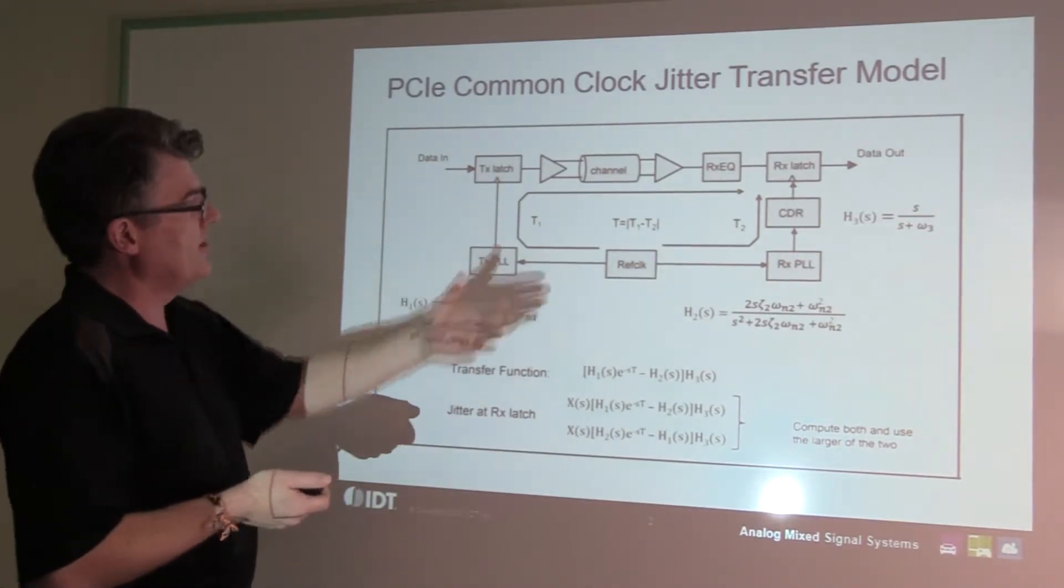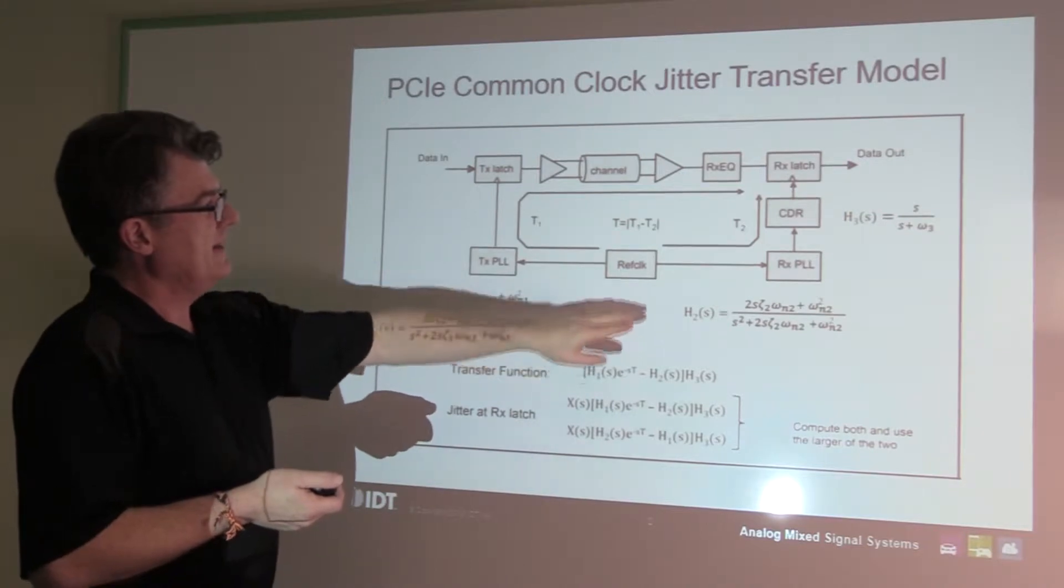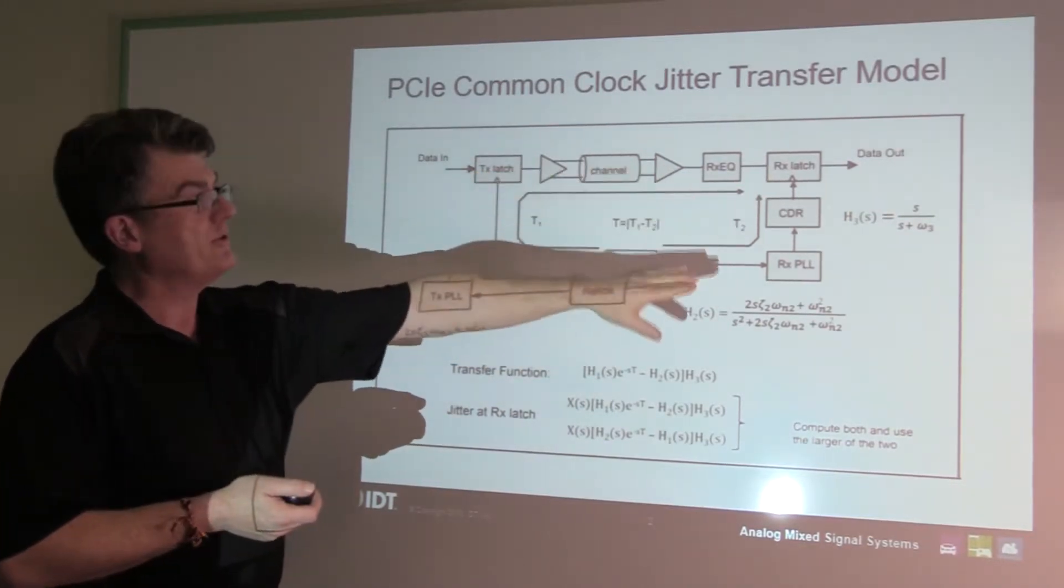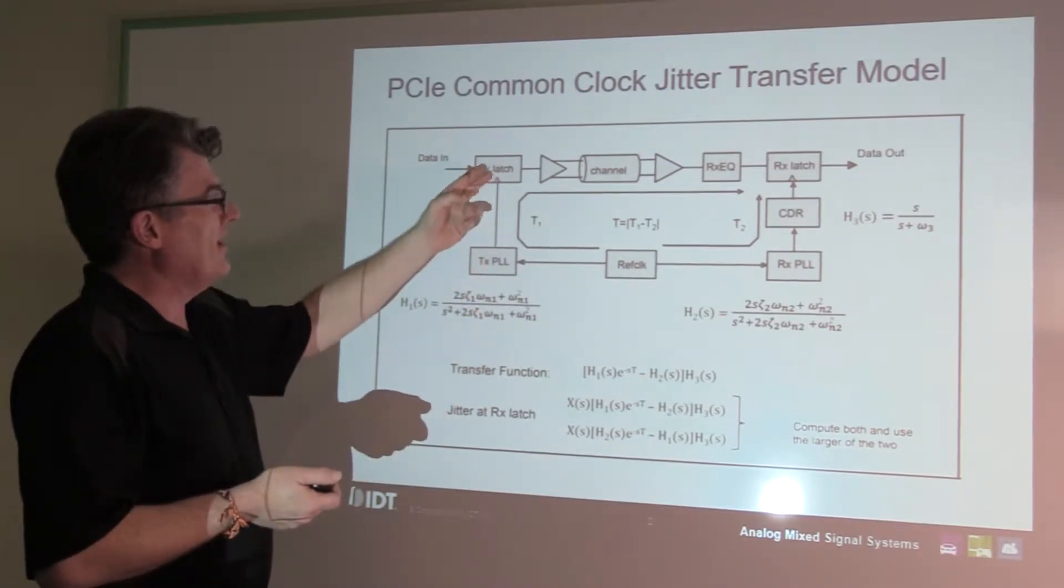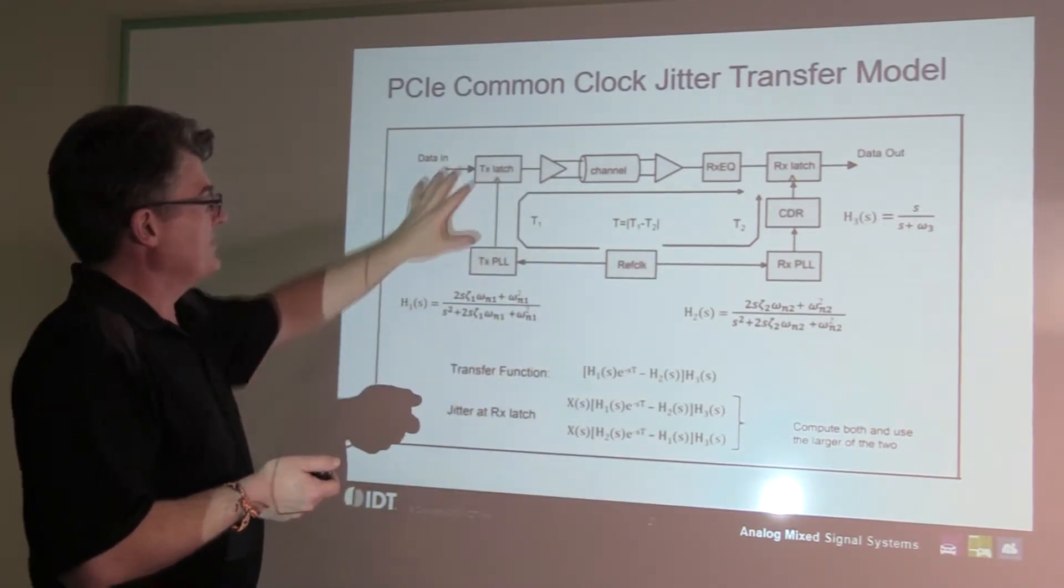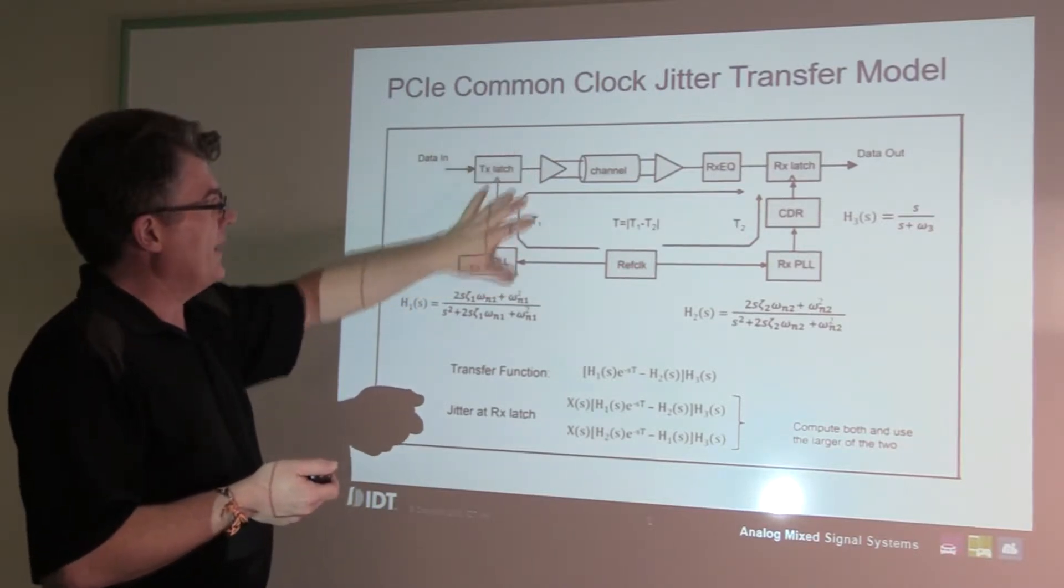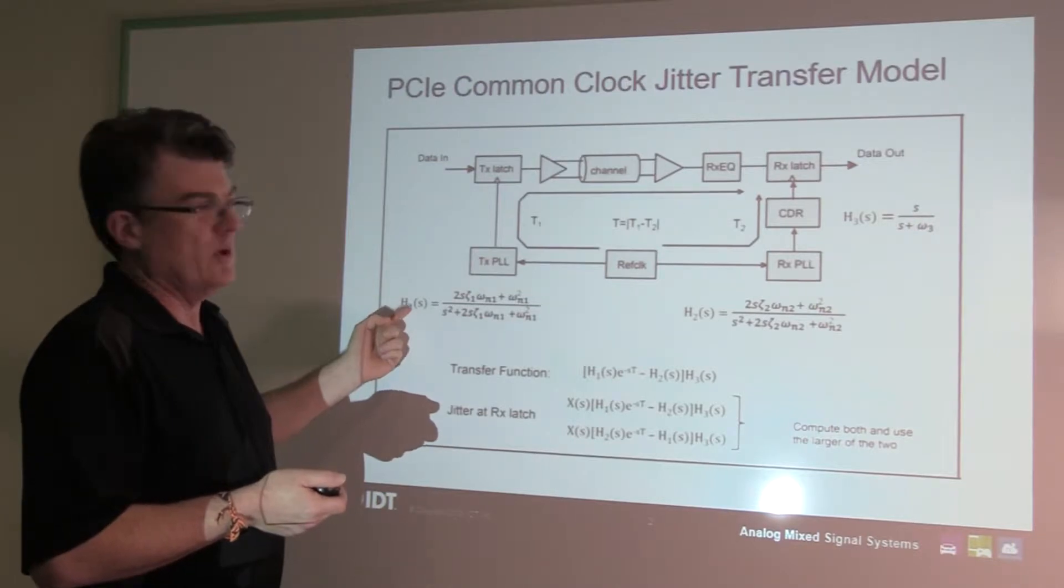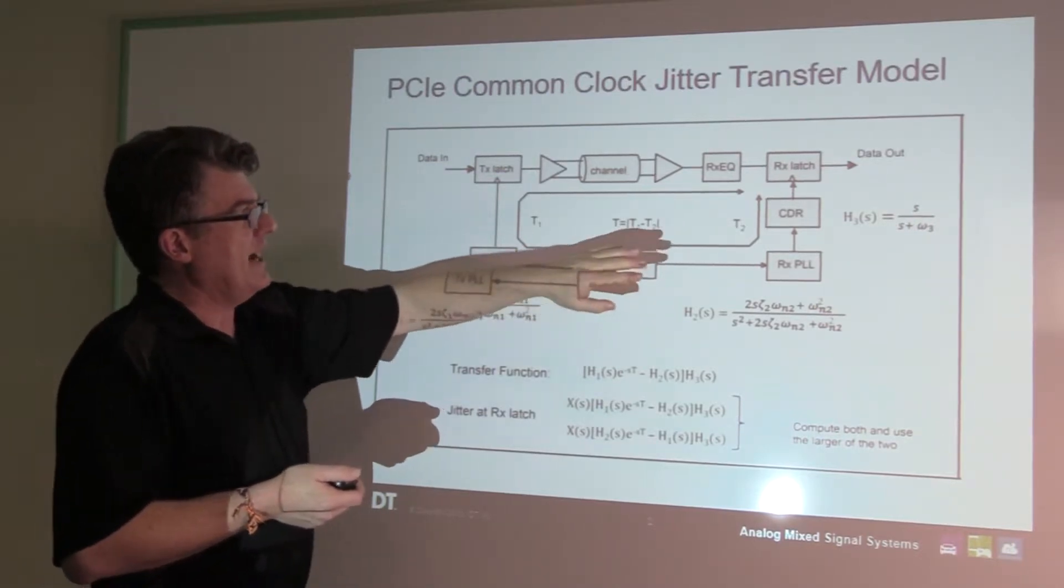It's the common clocked environment, which means that we're assuming that the clock is common for both the transmit side and the receive. Basically, you've got a transmitter PLL and a transmitter latch over here, and this is given by the jitter transfer of the transmitters, given by this equation called h1.